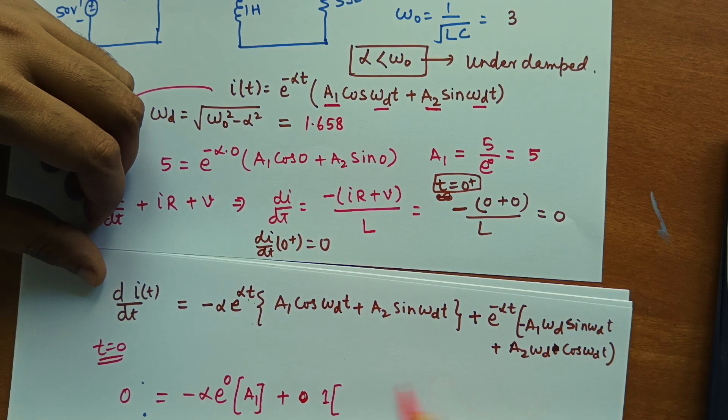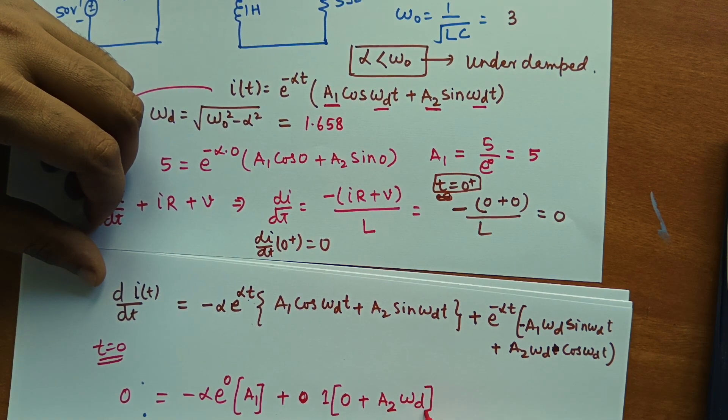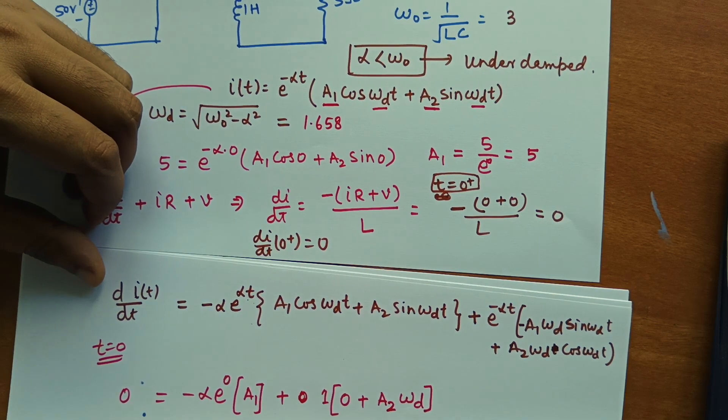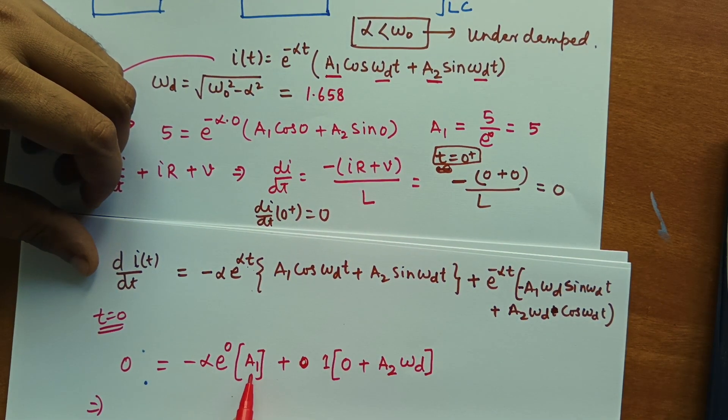Then sin. So this entire term will be 0 because sin is there. For the second term, we have 0 plus a2 omega d. That's it. Now we can calculate.